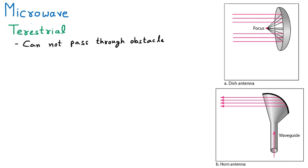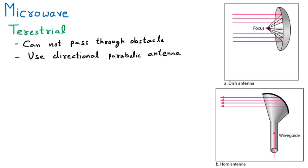Comparing microwave with radio waves: radio waves use omnidirectional antennas, meaning they work in all directions. But microwave uses directional parabolic antennas. There are two types of parabolic antennas. The first is the dish antenna, which is very popular. The second is the horn antenna.